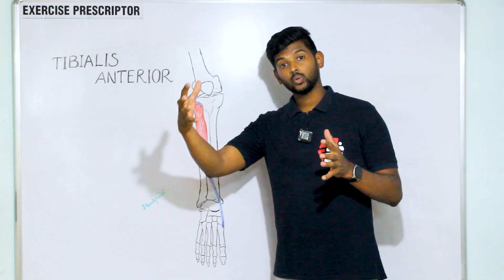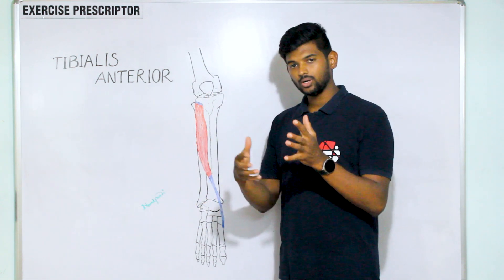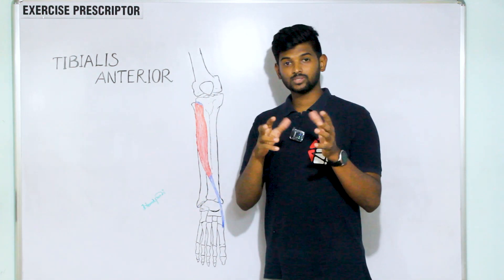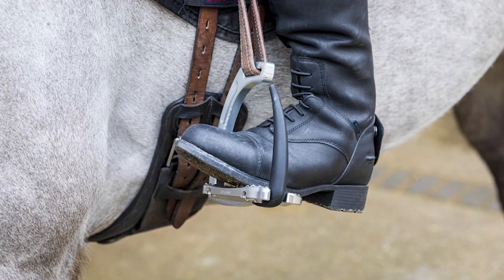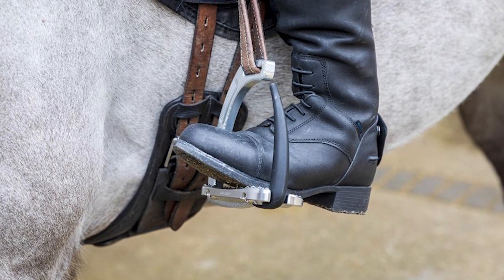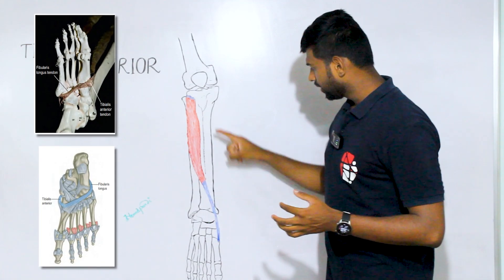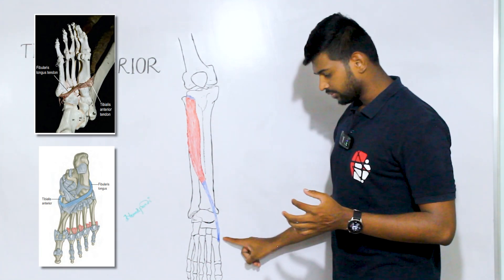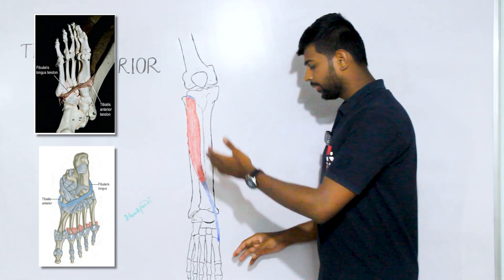The distal attachment of the tibialis anterior and peroneus longus, also called fibularis longus, these two muscles form the stirrup-like appearance to support the arch of the feet.